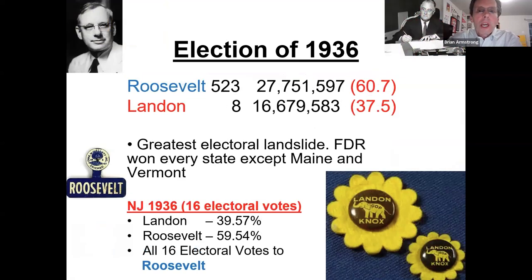Roosevelt ran for reelection and got a resounding victory against Al Landon, who had a campaign sunflower as his slogan symbol. This was the greatest electoral landslide — 523 electoral votes — with Landon only winning Maine and Vermont. A very big win for Roosevelt, and New Jersey went soundly for Roosevelt.